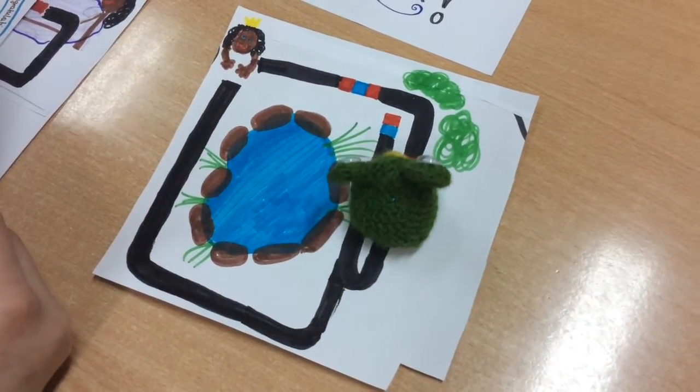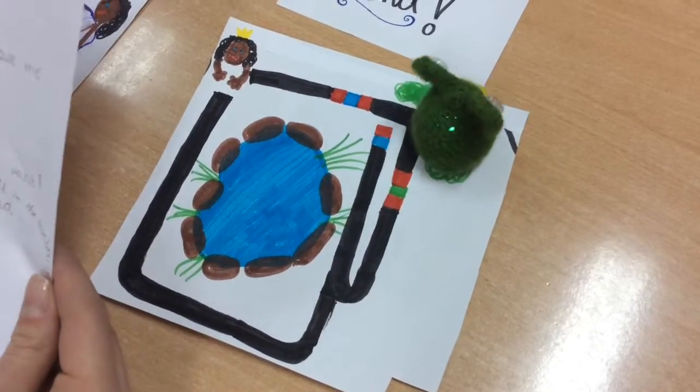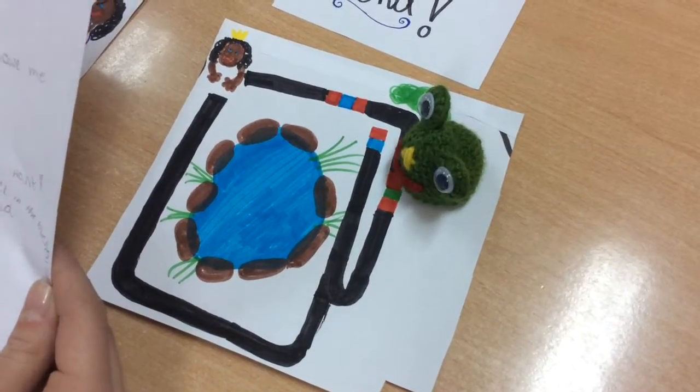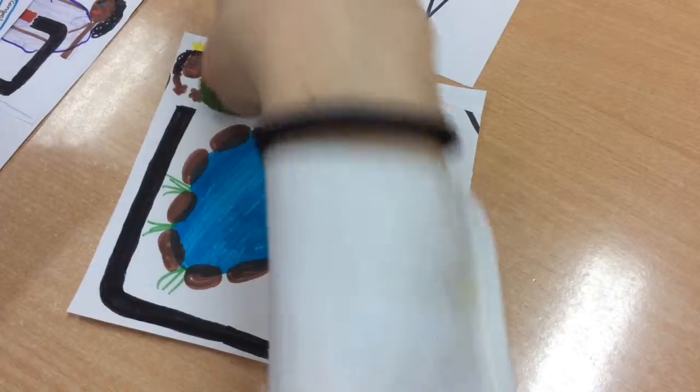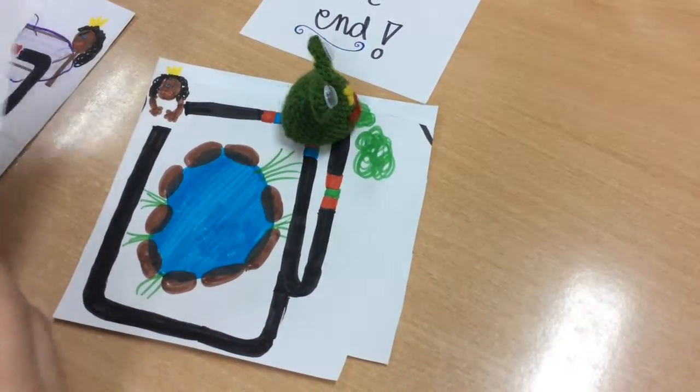Frog said, I can help you, but you will owe me something. Princess said, okay, I will give you anything you want. Frog was looking for princess's ball in the bushes.